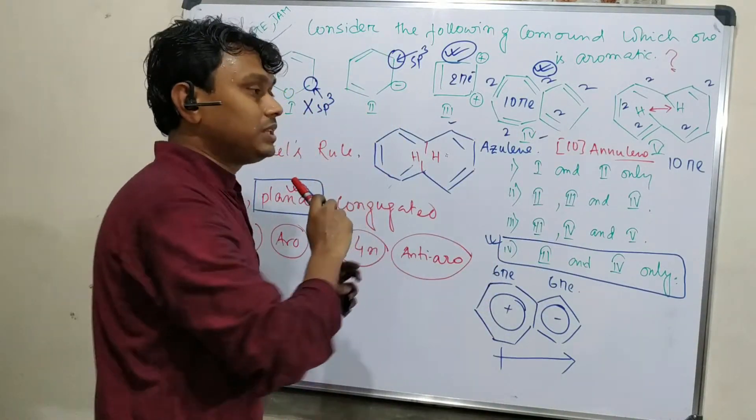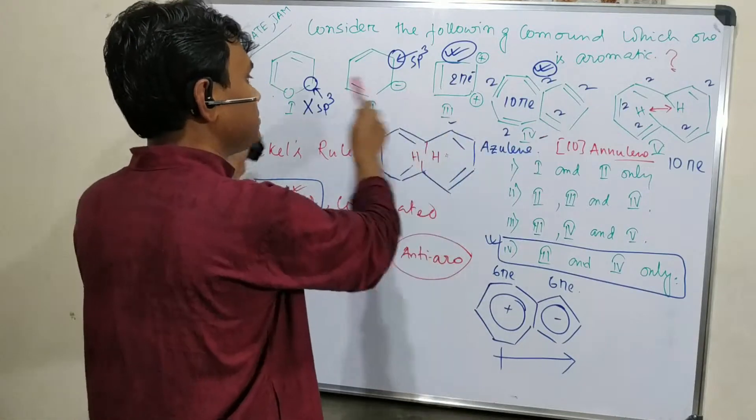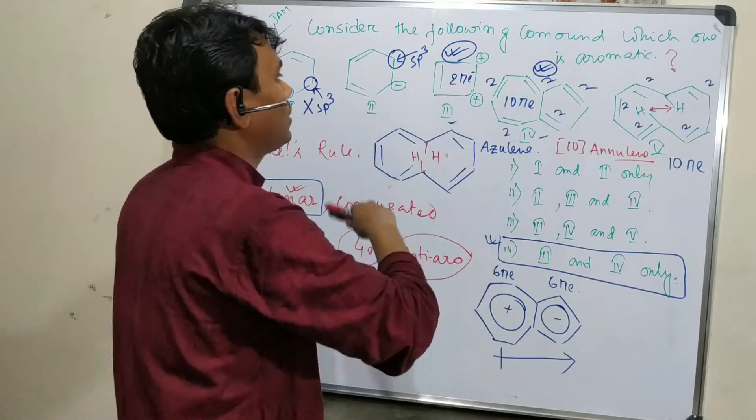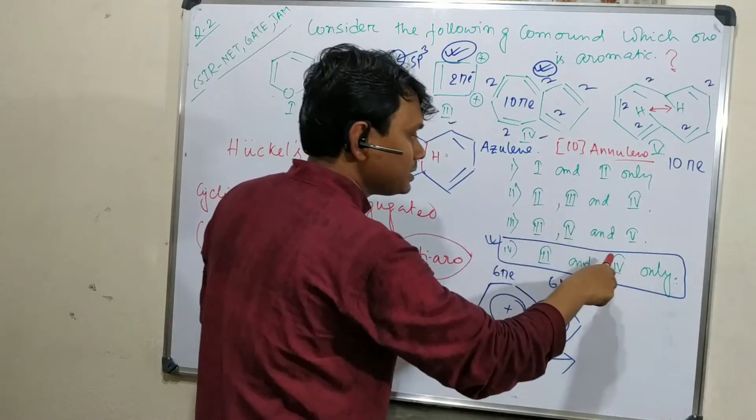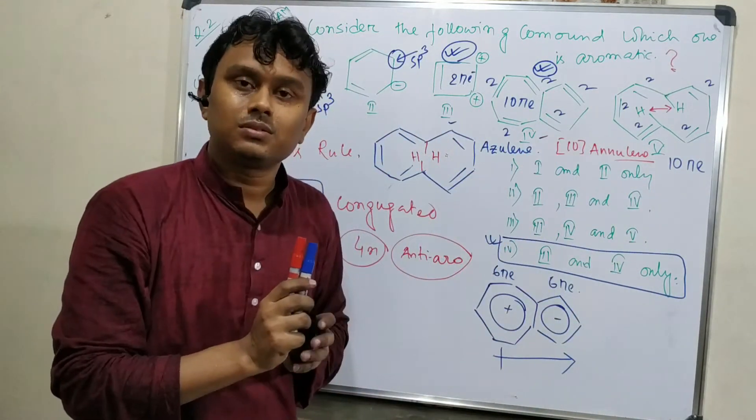Then you have to select which is the option fitting aromatic character: 3 and 4. Where is 3 and 4? 3 and 4 is here. So no need to think about others. This is right.